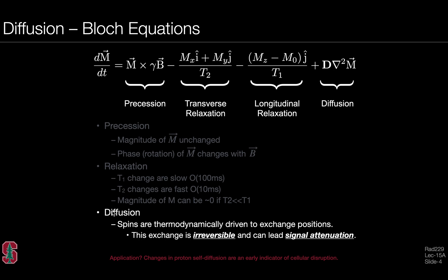Spins are thermodynamically driven to exchange positions as a function of having a non-zero temperature and moving around as a consequence of random thermal motion. This exchange is irreversible and can fundamentally lead to signal attenuation. We can design MRI experiments to be more or less sensitive to diffusion, and changes in proton self-diffusion — or the self-diffusion coefficient — are generally an early biomarker for cellular disruption.